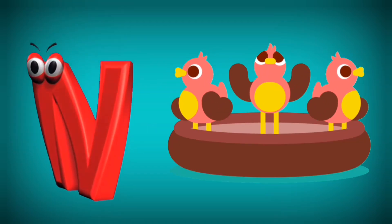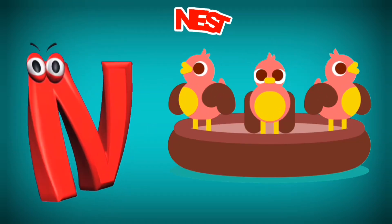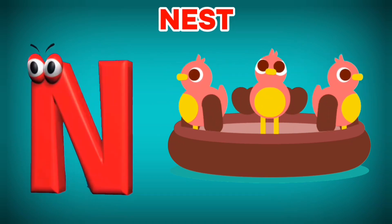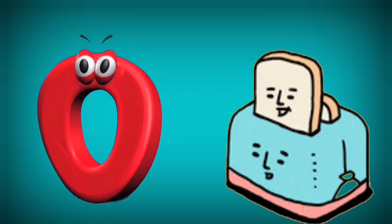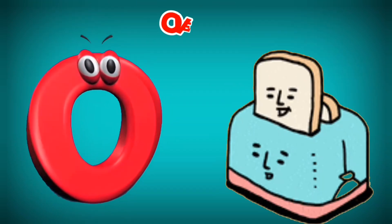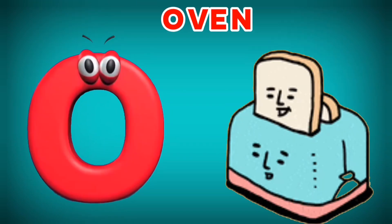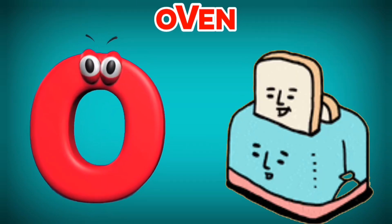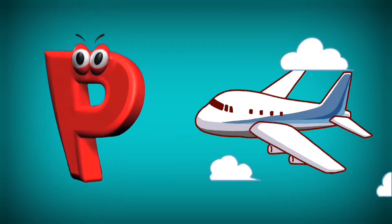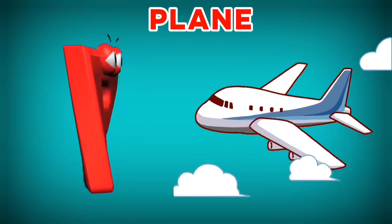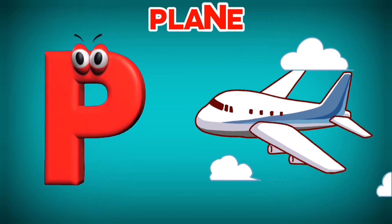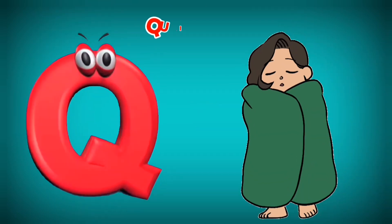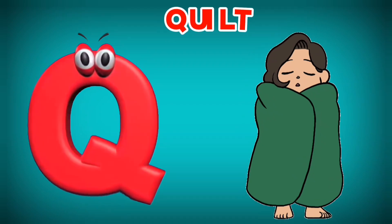N is for Nest. N, N. Nest. O is for Oven. O, O. Oven. P is for Plain. P, P. Plain.